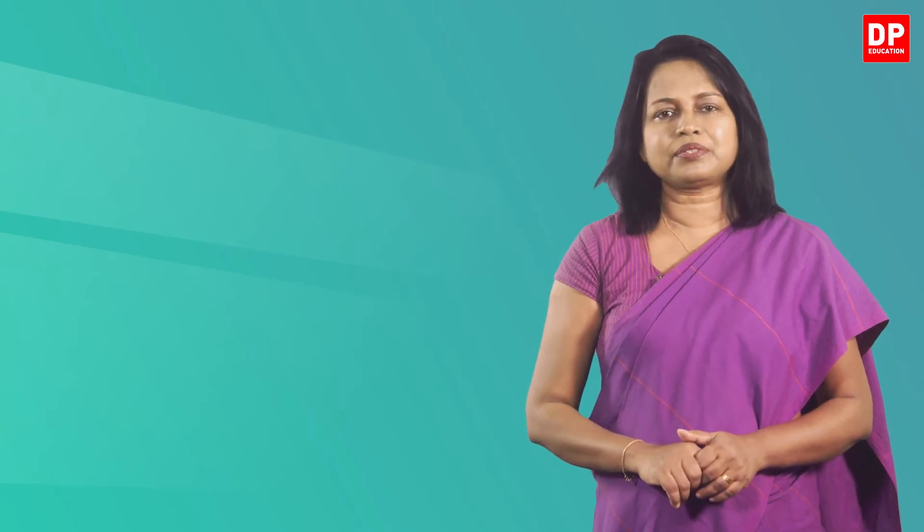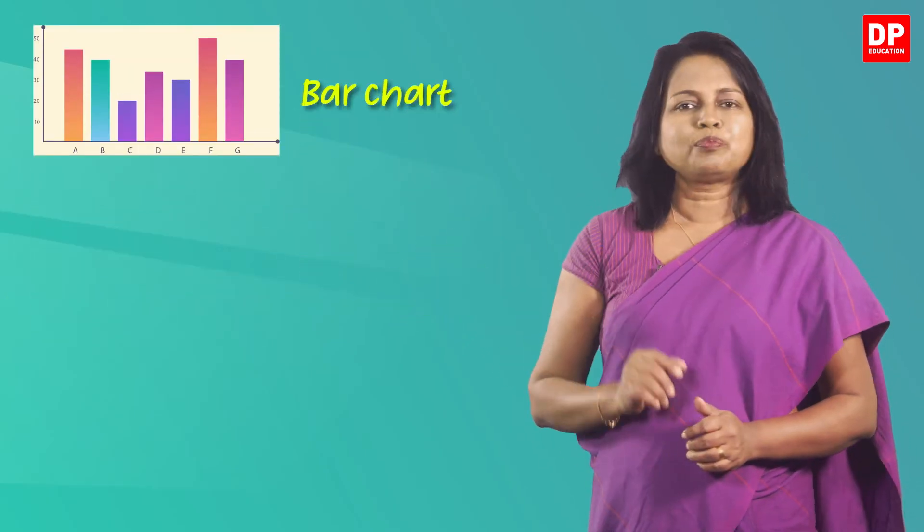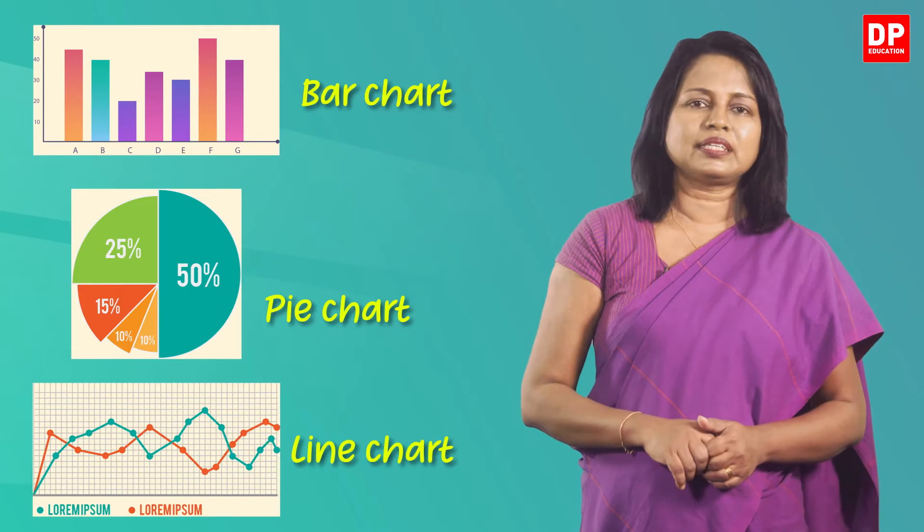As I explained in my previous lesson, a chart is a graphical representation of data. It is also called a graph. So in a chart, data is represented in a visual form. There are different ways to represent data visually. You are already familiar with these 3 types: bar chart, pie chart, and line chart.